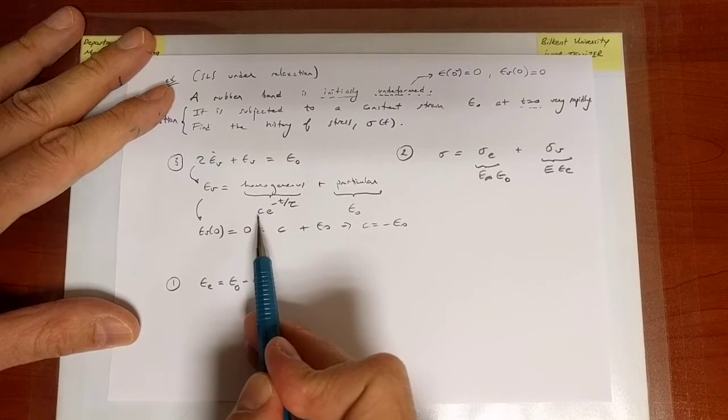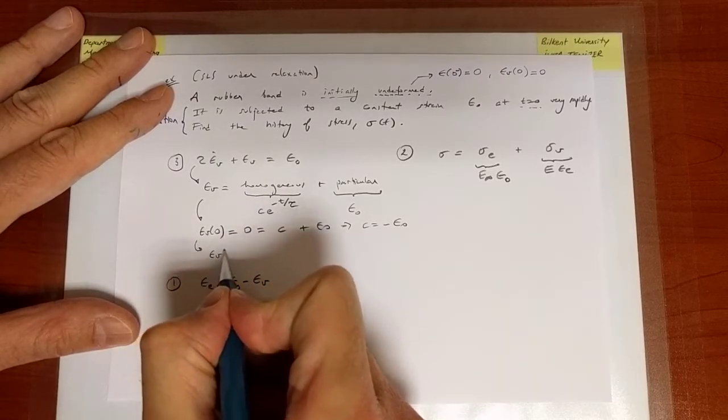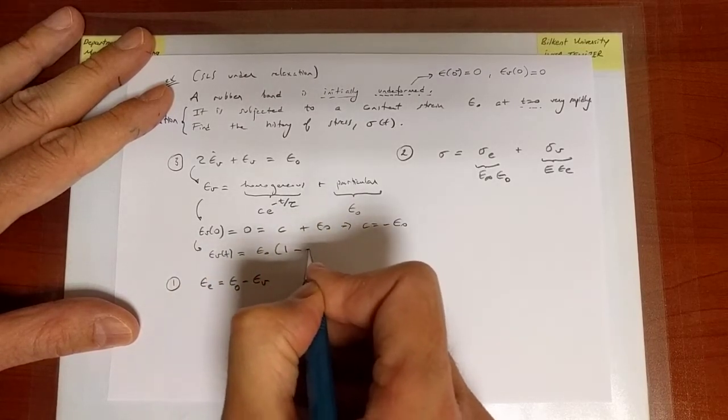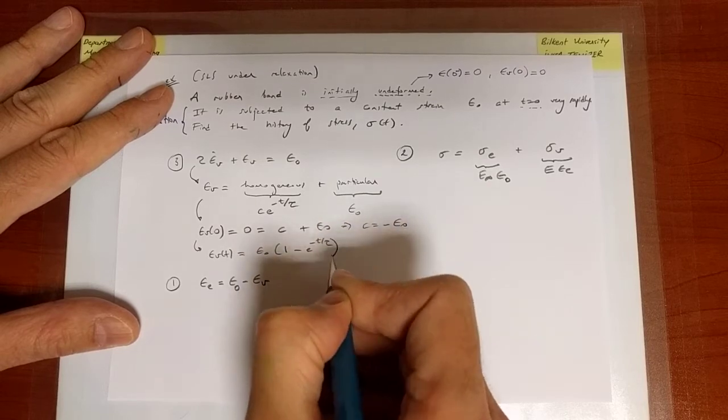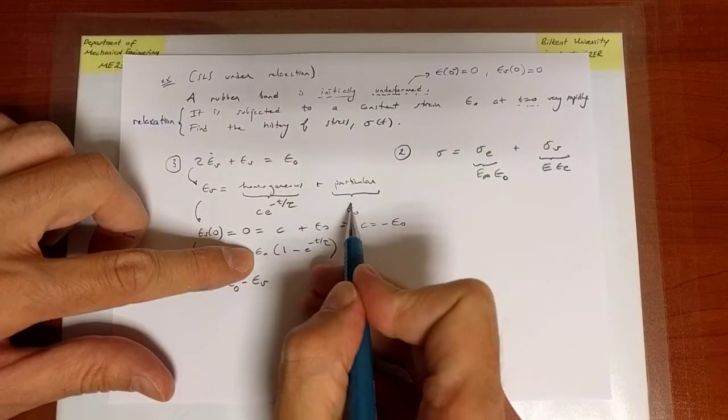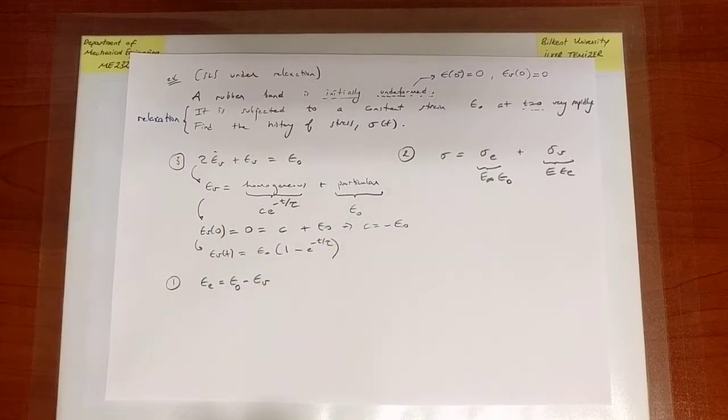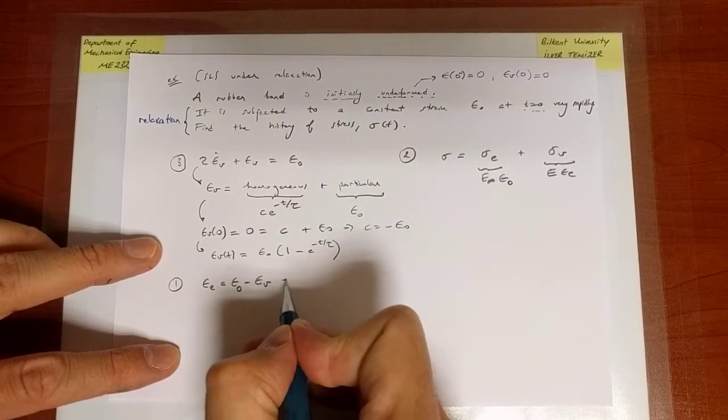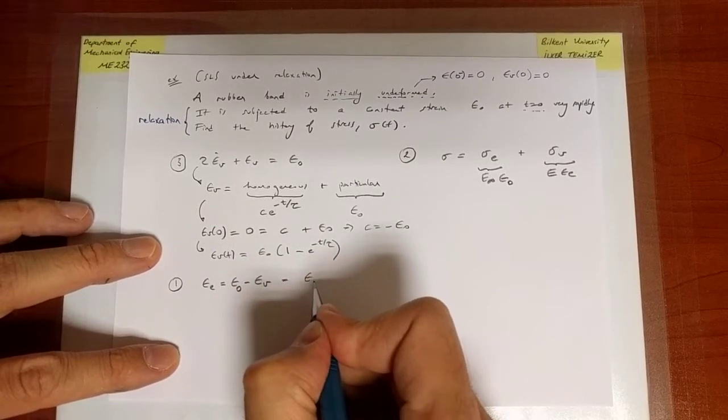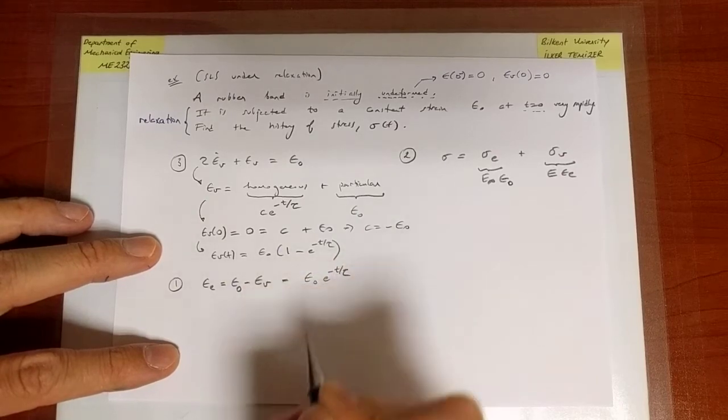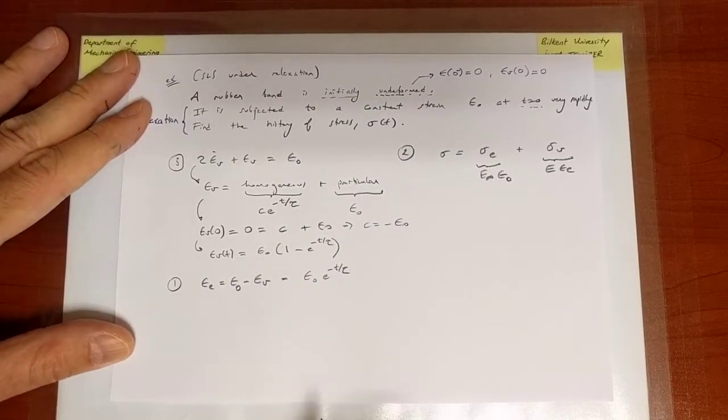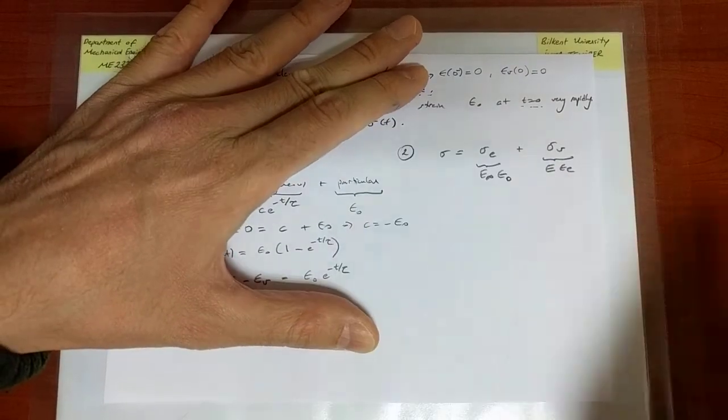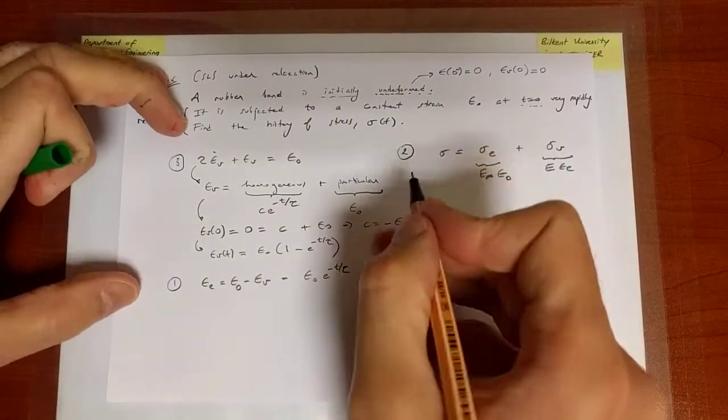Why do we have a constant? Because we have to match the initial conditions. The initial condition is that at time equals 0, the strain has to be equal to 0. At time equals 0, if I plug in 0, this becomes 1, it's c plus epsilon_0. Hence, I conclude that c is equal to minus epsilon_0. So I can write epsilon_v as a function of time, which is epsilon_0(1 - e^(-t/tau)). And that's it. As soon as I know that, I can subtract that from the total strain and see that the elastic strain varies as such.